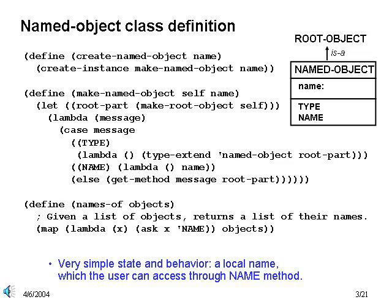First, the named object class definition. We've already seen this, so we just note that this is a very simple class with simple state and behavior. In particular, we have a name local state variable which an outside user can access through the name method. Named objects inherit from our root object class, and so support the is-a method as well. Note that we also have a names-of procedure defined here, which is just a handy way to get a list of names corresponding to a list of named objects.